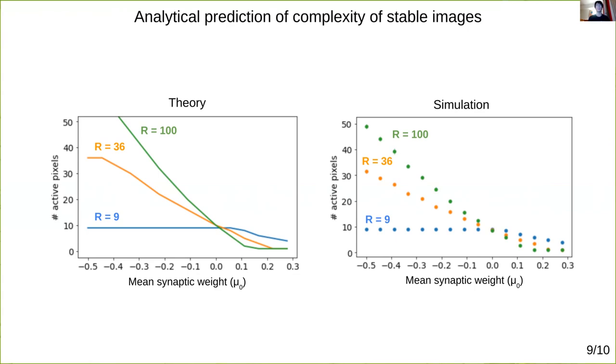Although we note that for large R, one sees fewer active pixels in the simulation than predicted, which is consistent with exactly the type of finite size effects one expects in this network.